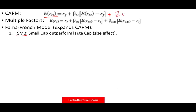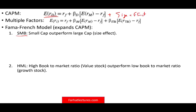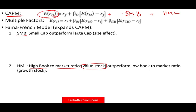They added the size effect and the high minus low factor to the formula. What is high minus low? They found that high book-to-market ratio stocks — considered value stocks — outperform low book-to-market ratio stocks, which are growth stocks. So the argument is: beta for the market, how the stock reacts to the market, is not the only factor. There are two other factors: the size and the value of the stock.